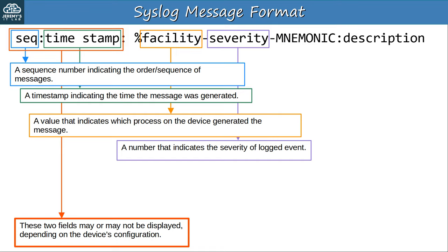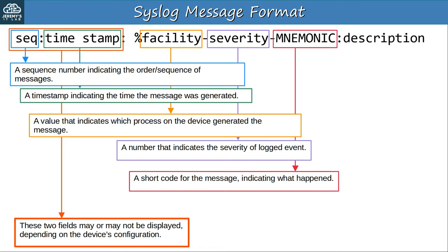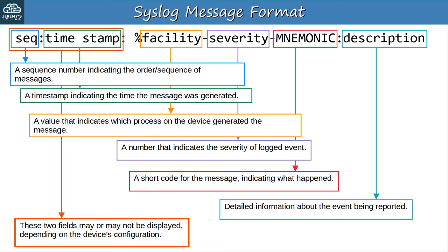Next is the severity, which indicates the severity of the event. Some messages are just informational, simply letting you know that something happened. Other messages indicate something much more serious that might need to be dealt with immediately. There are 8 severity levels and you'll need to know them all for the exam. Then there is a mnemonic, which is a short code for the message that indicates what happened — for example, if the facility is OSPF, the mnemonic might indicate the message is about OSPF neighbor adjacencies. Finally there is the description, which is the detailed information about what actually happened.